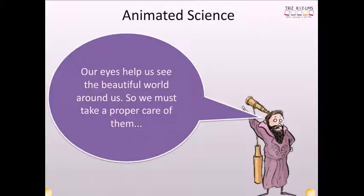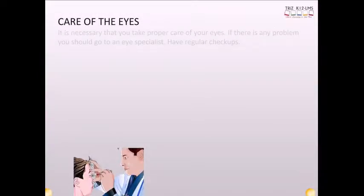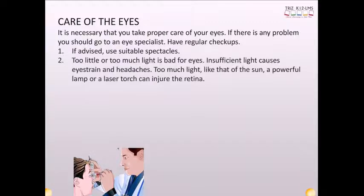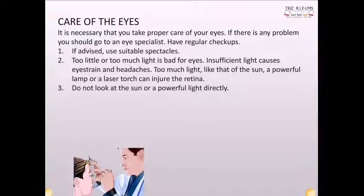Our eyes help us see the beautiful world around us, so we must take proper care of them. Care of the eyes: It is necessary that you take proper care of your eyes. If there is any problem, you should go to an eye specialist. Have regular check-ups. If advised, use suitable spectacles. Too little or too much light is bad for eyes. Insufficient light causes eye strain and headaches. Too much light, like that of the sun, a powerful lamp, or a laser torch, can injure the retina. Do not look at the sun or a powerful light directly.